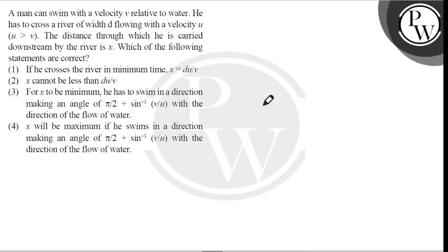The distance through which he is carried downstream by river is X. Which of the following statements are correct? Number one, if he crosses the river in minimum time, X is equal to DU by V. Number two, X cannot be less than DU by V.